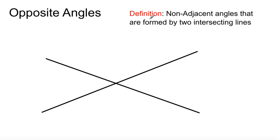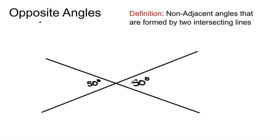Opposite angle: the definition is non-adjacent angles that are formed by two intersecting lines. The thing about opposite angles is they're the same. So let's just say this angle here is 50 — this angle right across from it will also be 50. There are many ways to identify angles, and one of them is by using opposite angles. Opposite angles are formed by two intersecting lines, and if this is 50, therefore that is also 50.